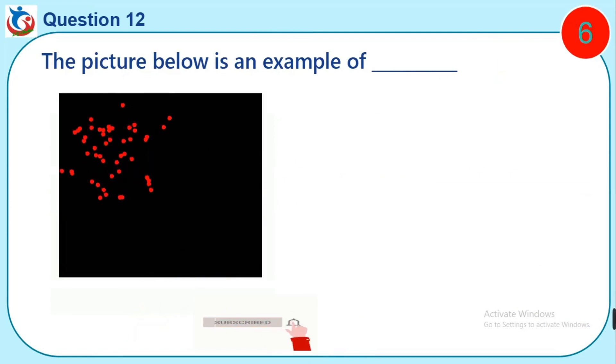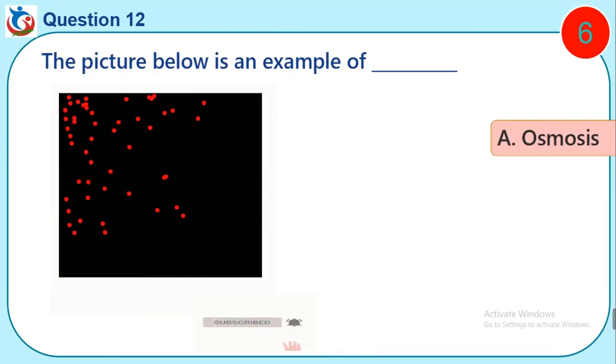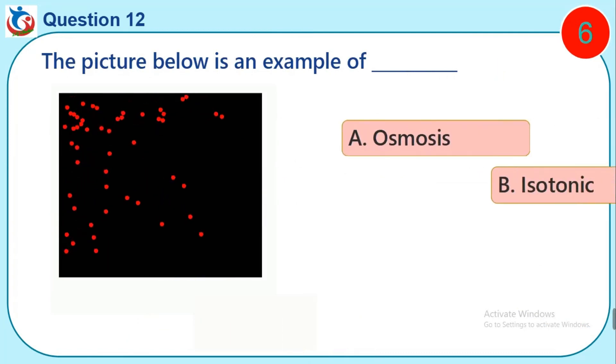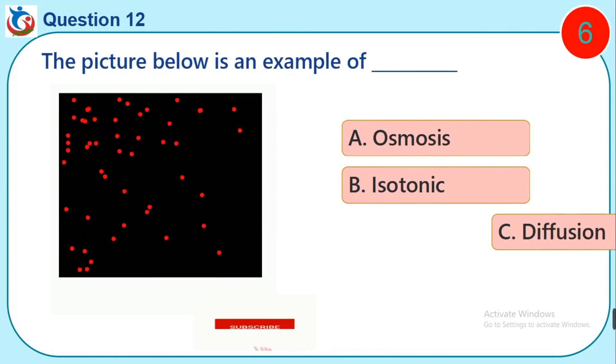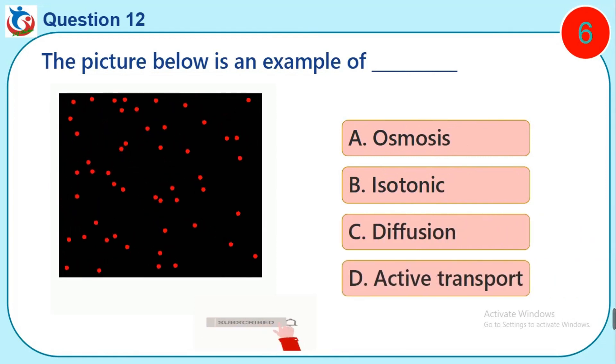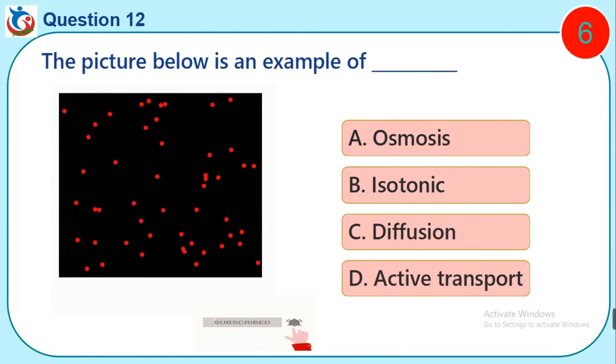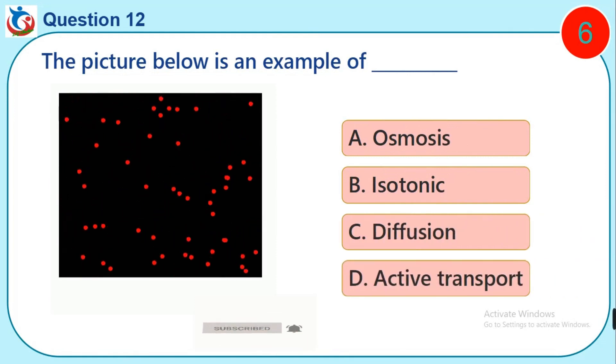Question 12. The picture below is an example of dash. A. Osmosis. B. Isotonic. C. Diffusion. D. Active transport.